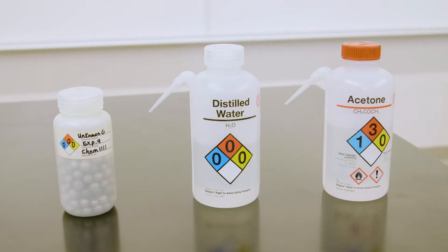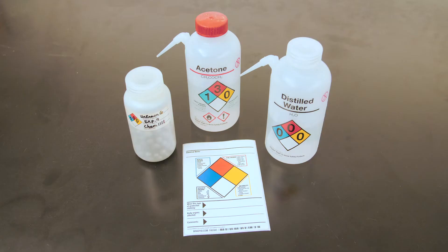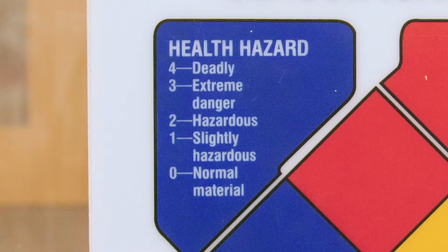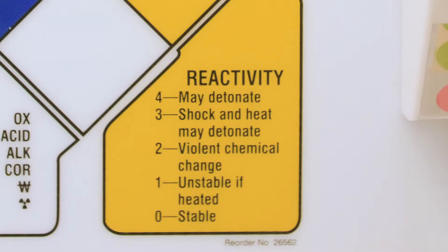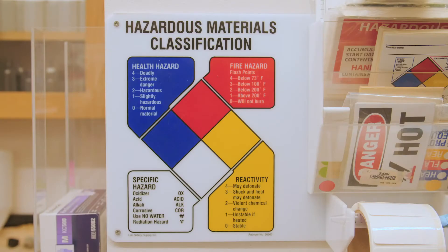A common way to quickly communicate the hazards of a chemical is the National Fire Protection Association diamond. The diamond may appear on a chemical container or in its storage area. The blue section provides health hazard information, the red section provides information about its fire hazard, the yellow section provides information about its reactivity hazard, and the white section includes codes to indicate any special hazards such as being an acid. A rating of 0 is stable whereas a rating of 4 is the most hazardous in each area.